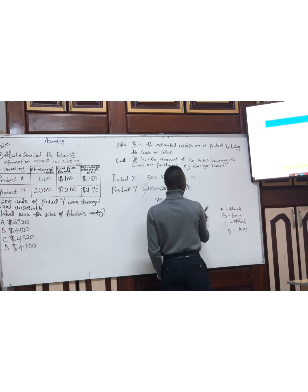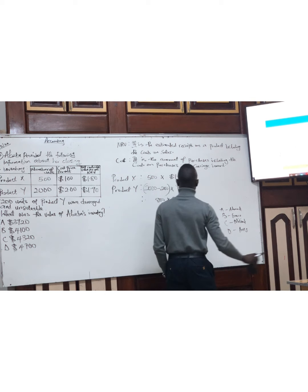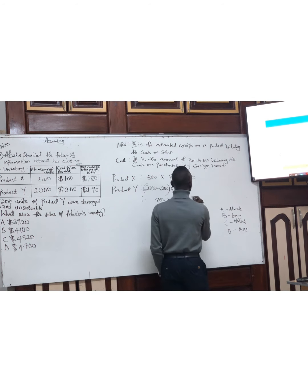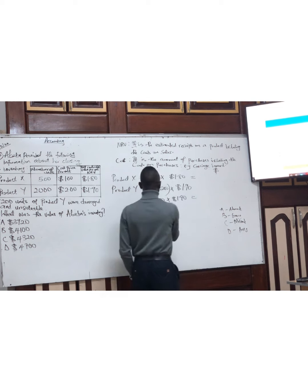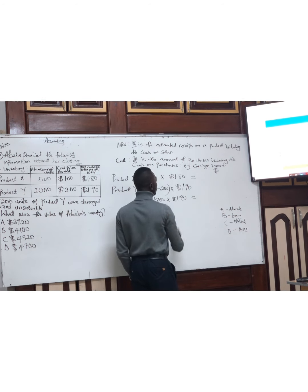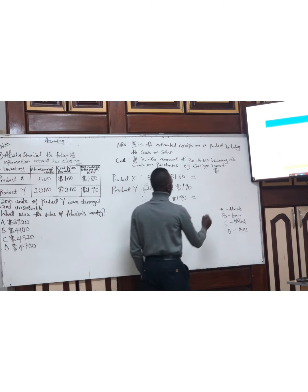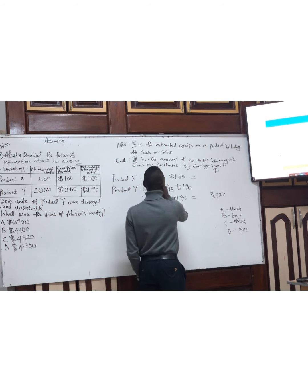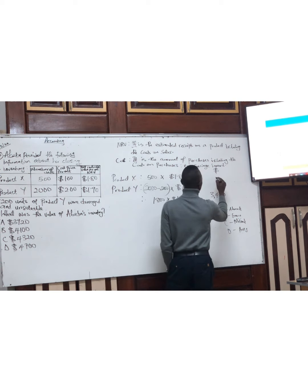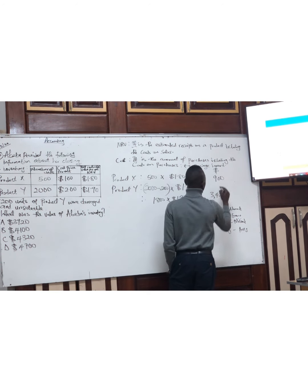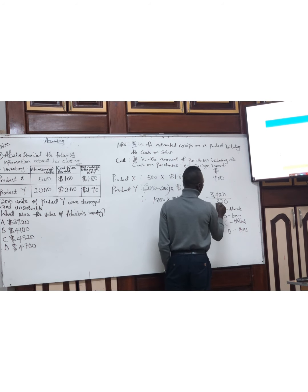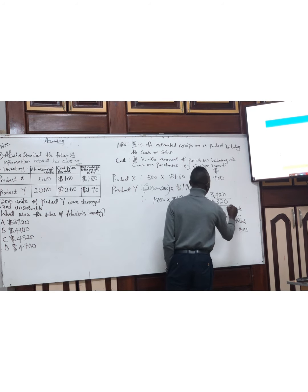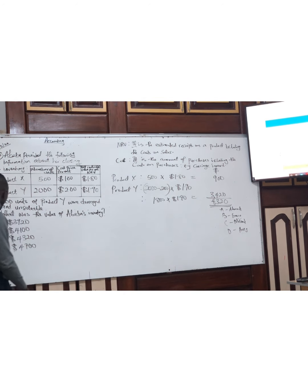1,800 multiplied by 1.90 gives us 3,420. And Product X gave us 900. So the total is 900 plus 3,420, which equals 4,320. That is the answer. Where is 4,320? It is option C. The answer is C.